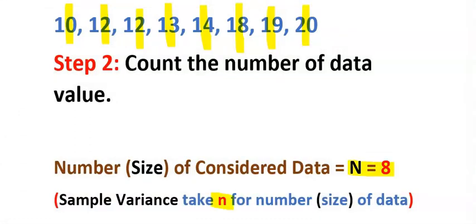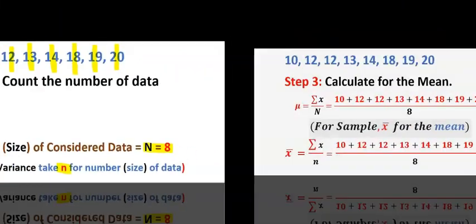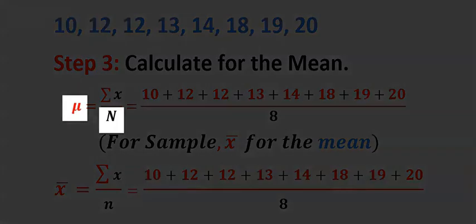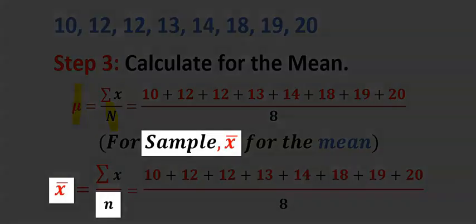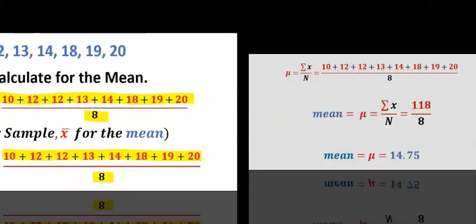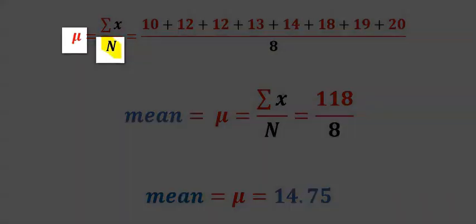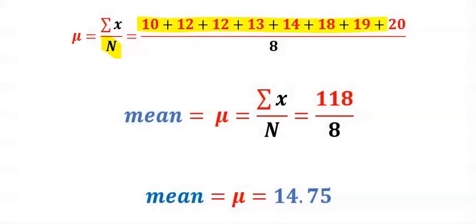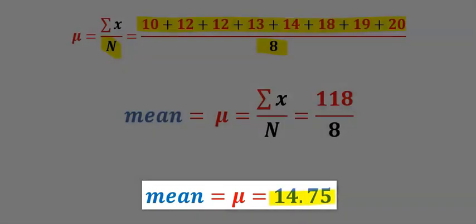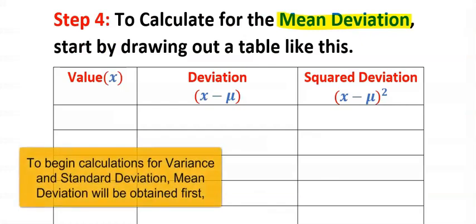Step three: calculate the mean. For population mean we normally use mu and capital N, while for sample we use x-bar and small n. However, the meaning does not change except where N is the summation of f. The capital N is just telling you that you're dealing with population. When you solve this, you get the mean to be 14.75.